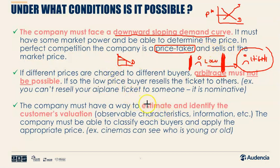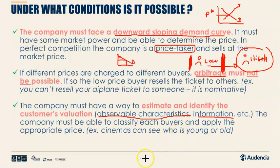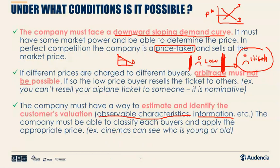The third condition is that I need to identify who these people are. We discriminate on observable characteristics or information collected about consumers — I can see if someone is old or young, a man or a woman, and so on. There are ways to look at a potential buyer and decide to charge them a high or low price. These are the three conditions to effectively discriminate.